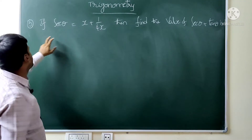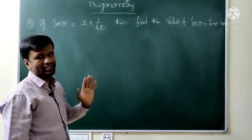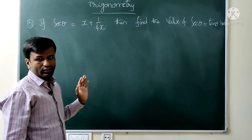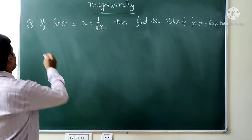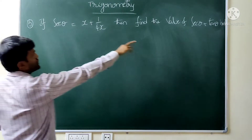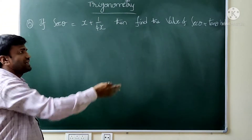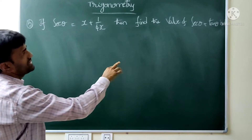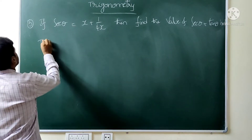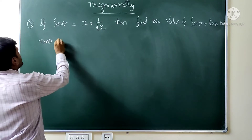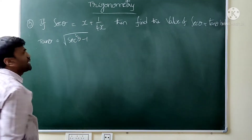Fifth question: if sec θ equals x plus 1 by 4x, then find the value of sec θ plus tan θ. This is a time-taking question. We need to find the value of tan θ. So tan θ equals root of sec² θ minus 1.